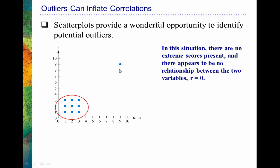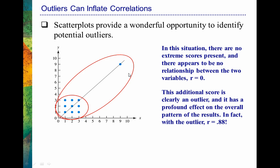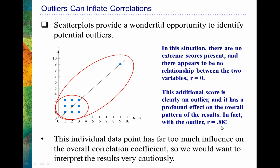Now check this out — let's include an outlier. You can see that this one data point is very different from the rest. With that data point included, I can now see a clear trend. But notice how this trend is so heavily influenced by this one point. If you were to compute the correlation coefficient with this data point included, we would now have a very strong positive correlation — a correlation coefficient of 0.88.